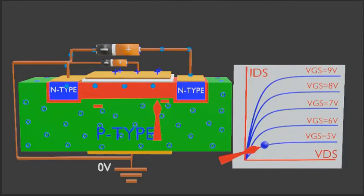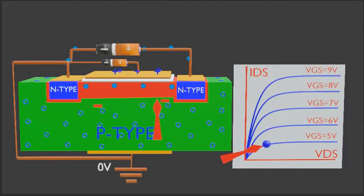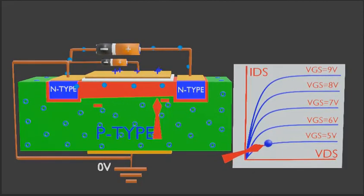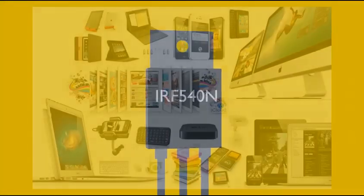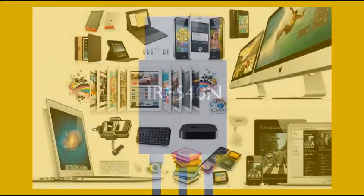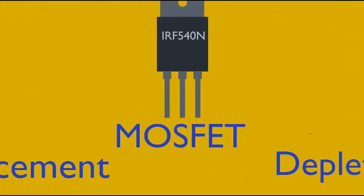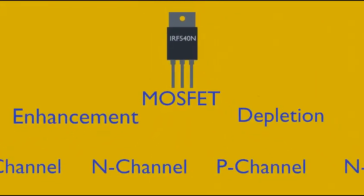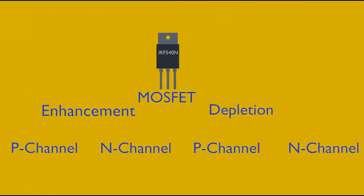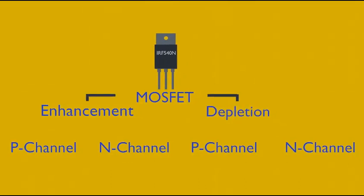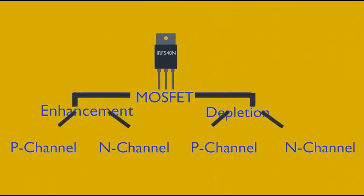MOSFETs are the basic building blocks of electronic circuits, known as metal oxide field effect transistors. MOSFETs are used in every modern electronic device. MOSFETs have two major types: enhancement type and depletion type. Further, they have subtypes — p-channel and n-channel.